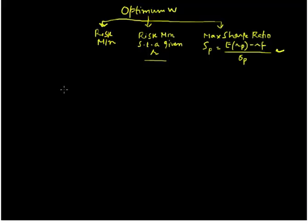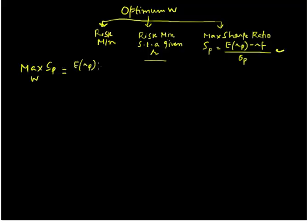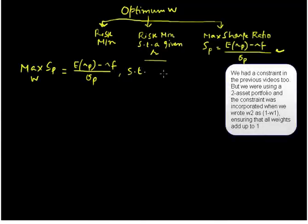So let us begin by expressing our problem. Our problem is to maximize the Sharpe ratio with respect to weights, and we have a constraint that all the weights must be equal to one.